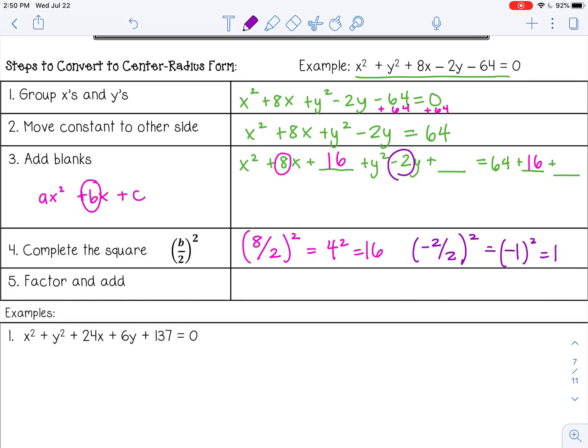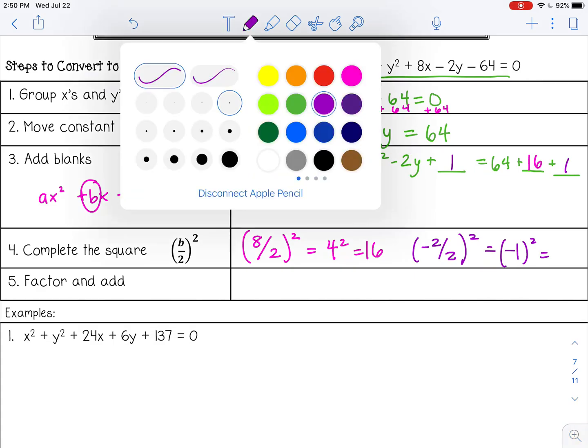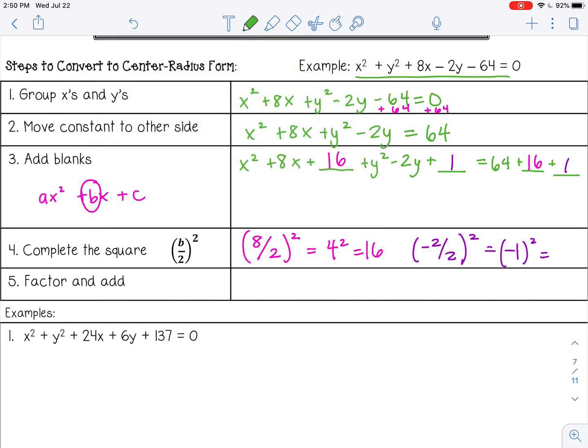Now that we have completed the square, we are going to factor and add. When I say factor, I mean we are going to factor each trinomial. I'm going to factor the x trinomial and the y trinomial, and then I'm going to add over here. Let's add because that's the easiest part. So 64 plus 16 plus 1, that's 81.